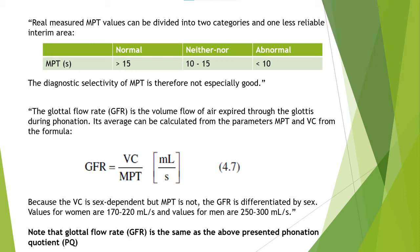The phonation quotient indicates the amount of air consumed during phonation and is obtained by dividing the vital lung capacity by the maximum phonation time. Real measured maximum phonation time can be divided into normal, abnormal, and neither, in seconds.